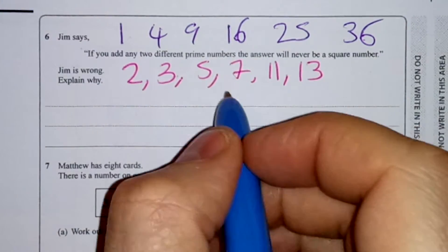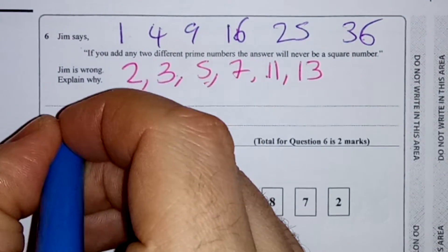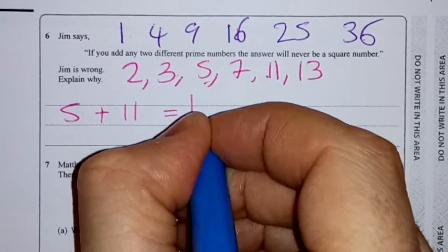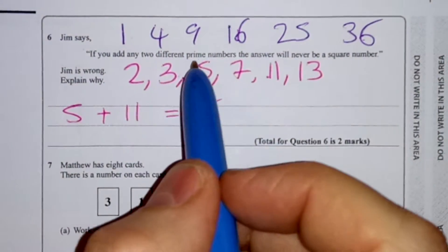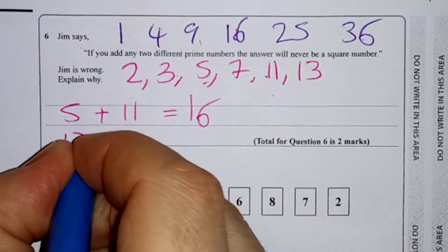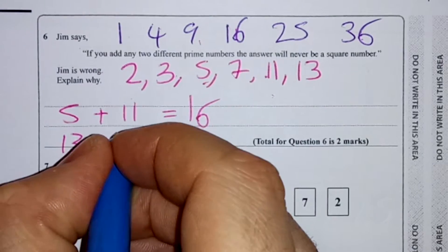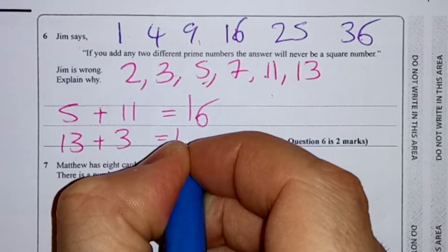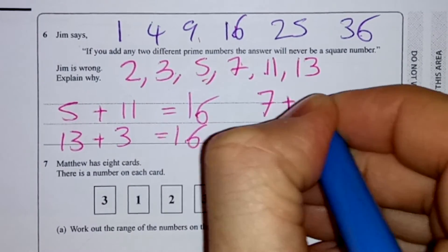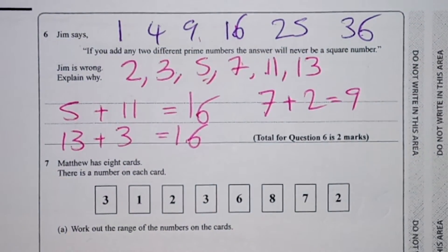together to add to give any of them. Oh, we've got 5 plus 11 equals 16. We could also have 13 plus 3 equals 16. We could have 7 plus 2 equals 9. Okay, any